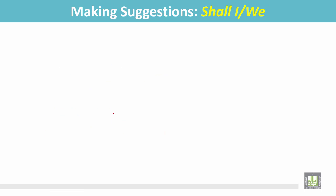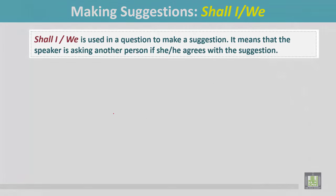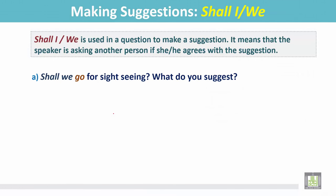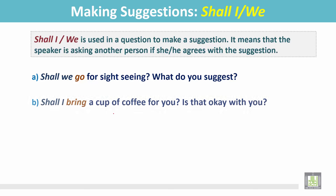Making suggestions: 'Shall I' or 'Shall we' is used in a question to make a suggestion. It means the speaker is asking another person if he or she agrees with the suggestion. For example: 'Shall we go for sightseeing?' 'Shall I bring a cup of coffee for you? Is that okay with you?' — the person is asking another person if he or she agrees with the suggestion.